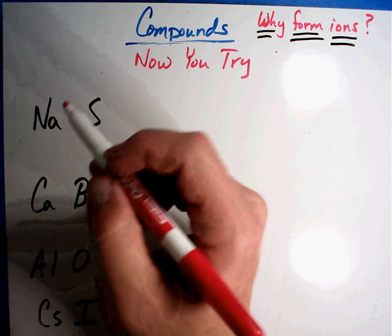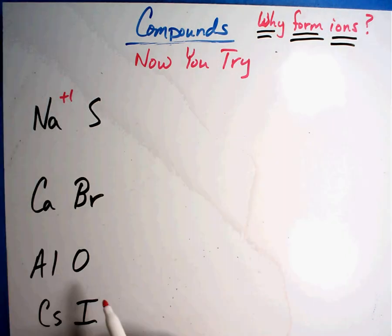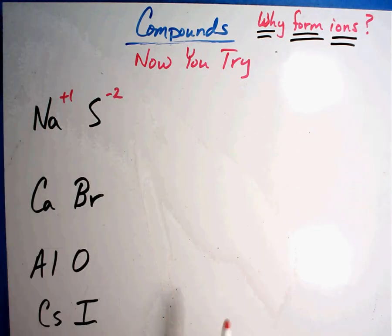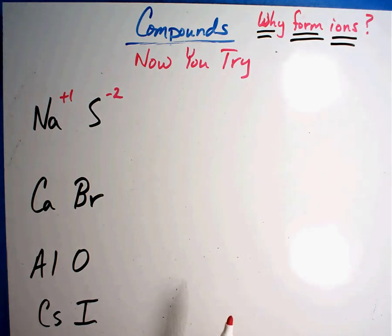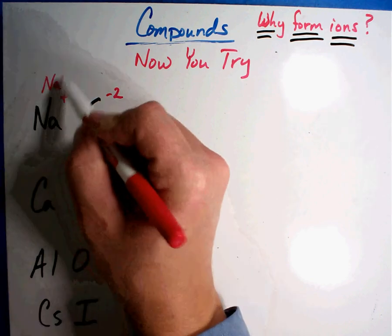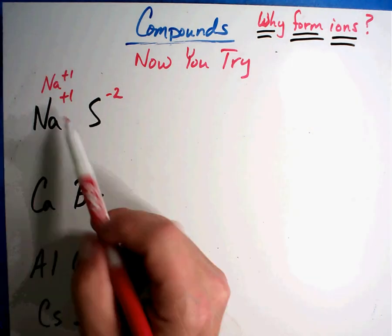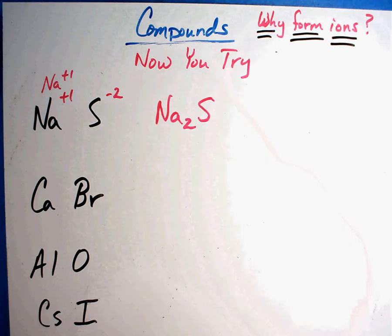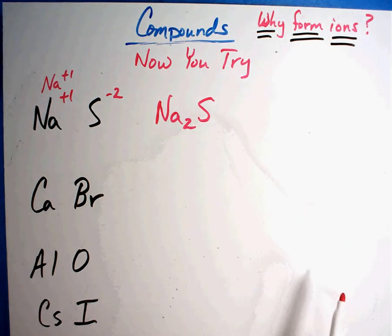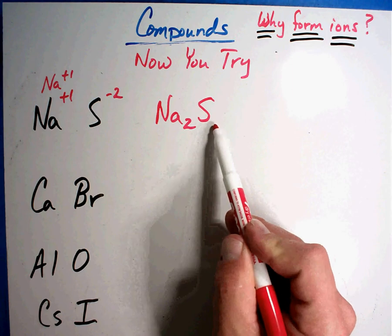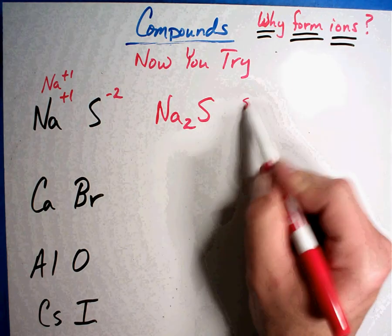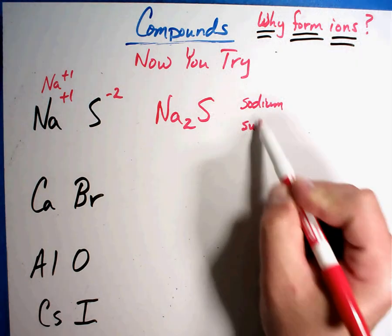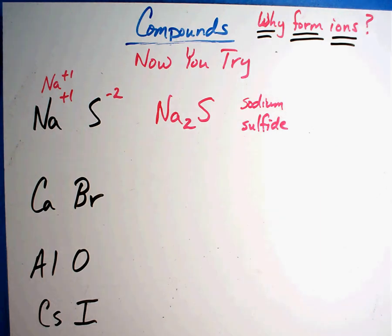All right, let's see how you did. Sodium, if I look it up on the chart, is plus one. Sulfur is minus two. They're supposed to equal zero, and they don't. So how could we make those equal? If I had an extra one of those, plus two would equal minus two. So the formula is two of those and one of those — Na₂S. You'll notice I don't write the one; a one is always understood. This one is called sodium, and sulfur becomes sulfide — sodium sulfide.